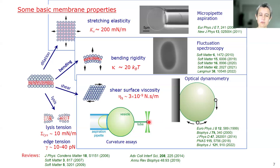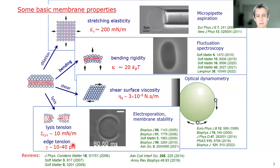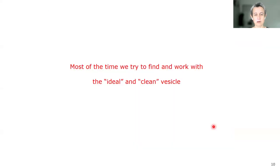With such a setup you can also pull tubes of very high curvature from the membrane and look at the curvature preference of different proteins between the flat membrane and the highly curved one. If you stretch the membrane too much you can create pores, and we look at the closure of such pores — induced with electroporation — to measure edge tension. If you're interested, here is a book about giant vesicles introducing various protocols and approaches for learning more about membranes.